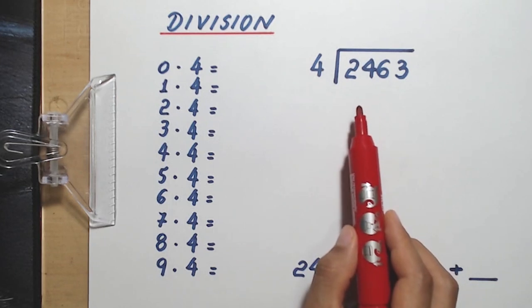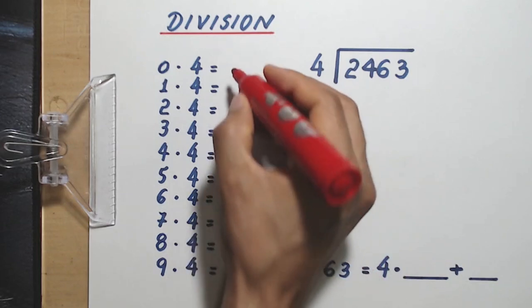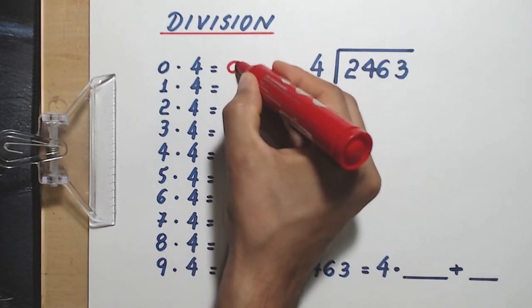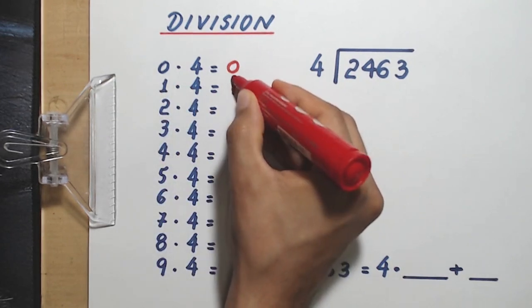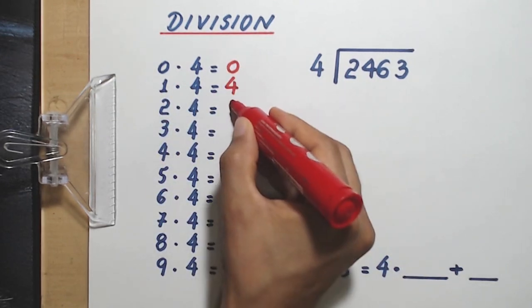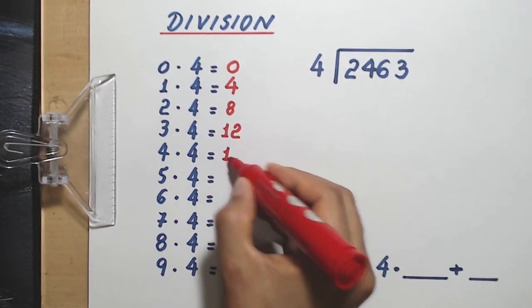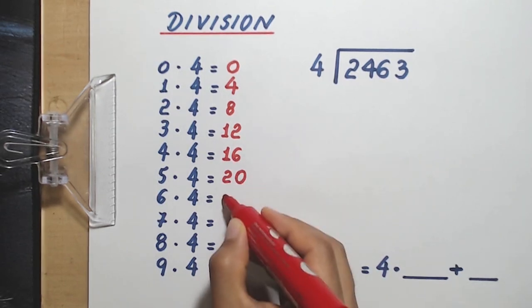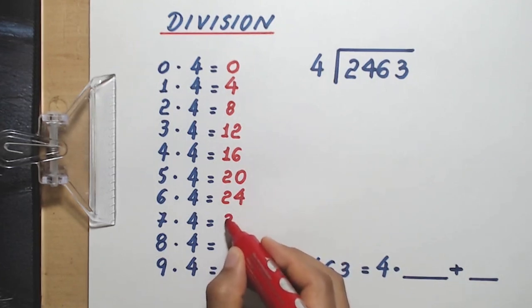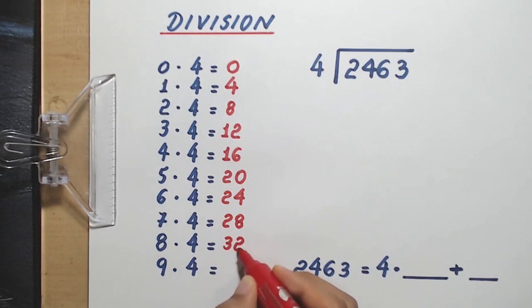Before we start the division, let's remind ourselves of the multiplication table of 4. 0 times 4 is 0, 1 times 4 is 4, 2 times 4 equals 8, 3 times 4 equals 12, 4 times 4 is 16, 5 times 4 is 20, 6 times 4 is 24, 7 times 4 is 28, 8 times 4 is 32, and finally 9 times 4 is 36.